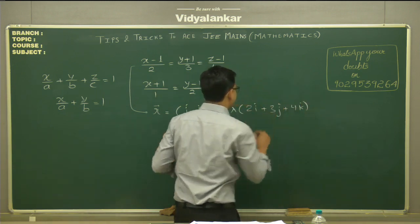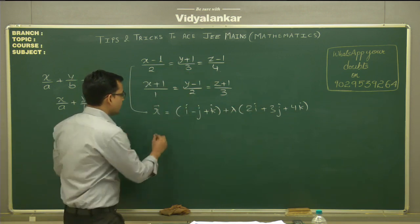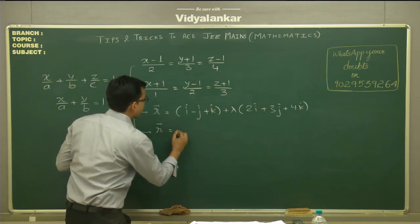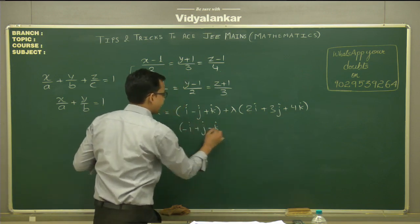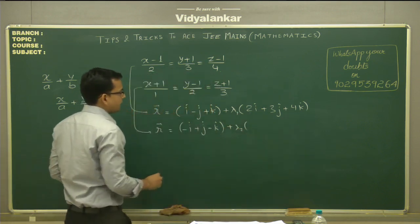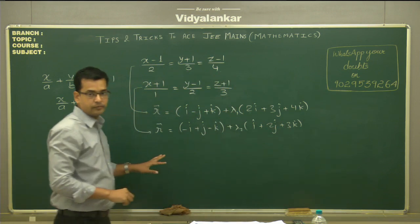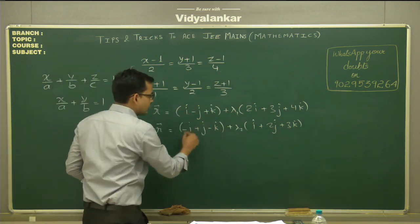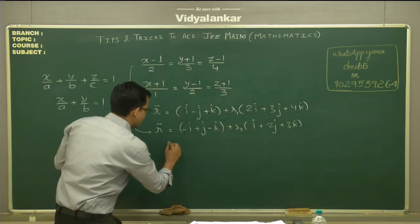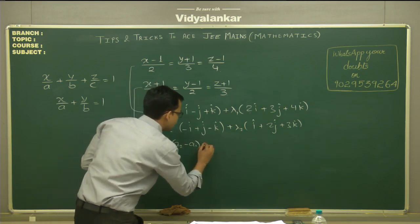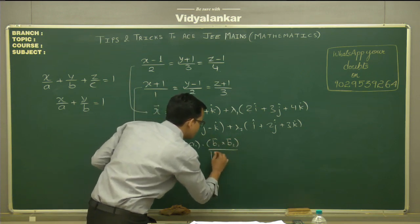So you can easily write equation of a line in vector form. Here the point is given, and in the bracket the direction ratios are given. Similarly, you write the equation of the other line, so that will be -i + j - k + λ₂ times (i + 2j + k). Now once you write lines in vector form, this is called a₁, this is called a₂, this is called b₁ and this is called b₂. And the distance between the lines is represented by, is given by this formula: (a₂ - a₁) dot (b₁ cross b₂) divided by modulus of (b₁ cross b₂).